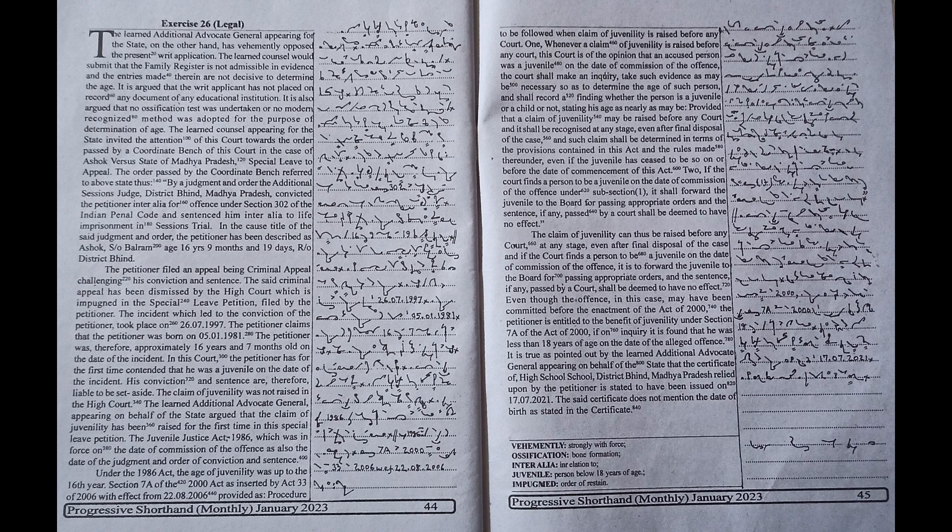In the case of Ashok v. State of Madhya Pradesh special leave to appeal, the order passed by the coordinate bench referred to above states thus: by a judgment and order, the additional sessions judge, District Bind, Madhya Pradesh, convicted the petitioner, inter alia, for offense under Section 302 of the Indian Penal Code and sentenced him.